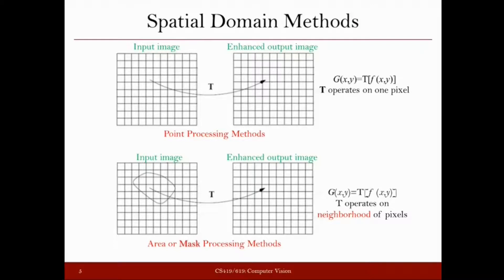Now let us discuss filtering in the spatial domain. When we are going to do filtering, we are going to get a new image. Whatever size we have for the input, the same size we maintain for the output image — so if you have an N×N image as input, you will normally get the same size image as output. What will change is the values — the intensities — for these pixels. When you are doing filtering, you get new intensities for your image, and that way you can say that your image has been modified.